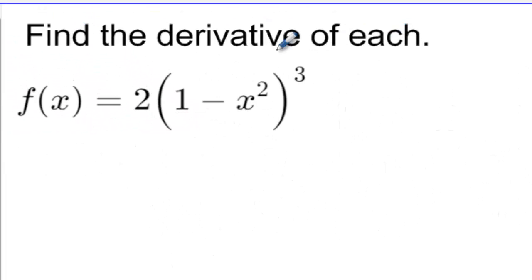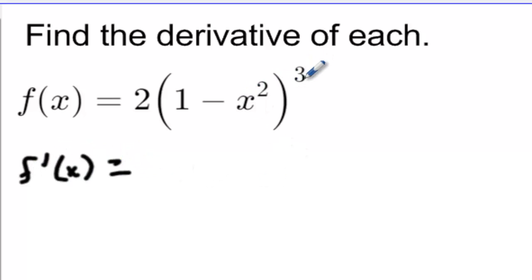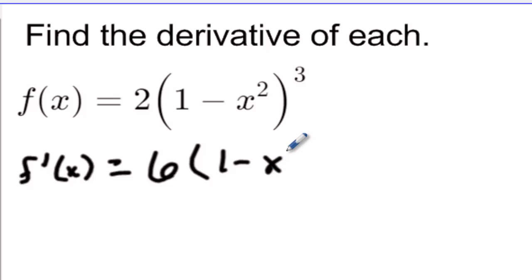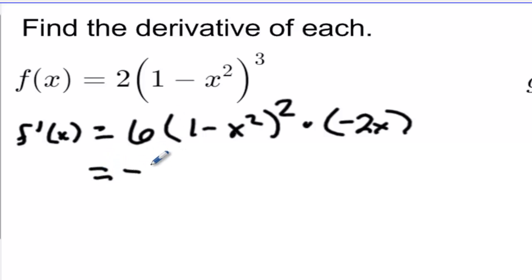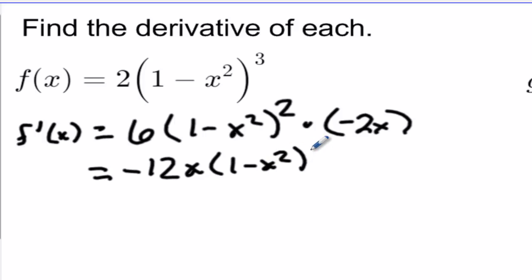Find the derivative of each. For f prime of x, we take the derivative of the outside function, which is raised to the third power: 3 times 2 is 6, reducing the power by 1, and leaving the inside function alone. Then multiply by the derivative of the inside, which is negative 2x. Cleaning up: negative 12x times 1 minus x squared, all squared.